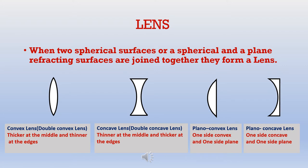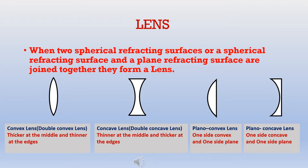As you know, the concave lens has a cave shape. For a plano-convex lens, one side is convex and the other side is plain. For a plano-concave lens, one side is concave and the other side is plain. Thus, we can define a lens as: when two spherical refracting surfaces, or a spherical refracting surface and a plain refracting surface, are joined together, they form a lens.